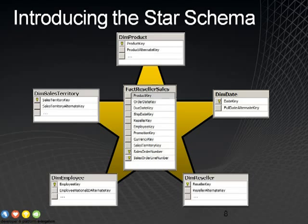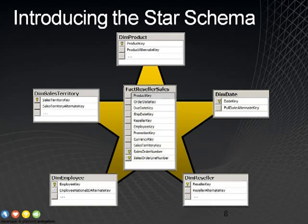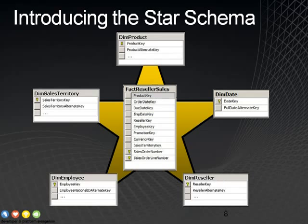Typically what you'll find is that a fact table has a lot more rows than a dimension table — in the millions or the billions even — and a relatively fewer number of columns. For example, products, you might have hundreds or thousands or even hundreds of thousands of products, but you would have millions and billions of rows in your fact table. So a dimension tends to have many, many columns that describe the entities and relatively few rows, in contrast to a fact table that has relatively few columns and many, many rows.